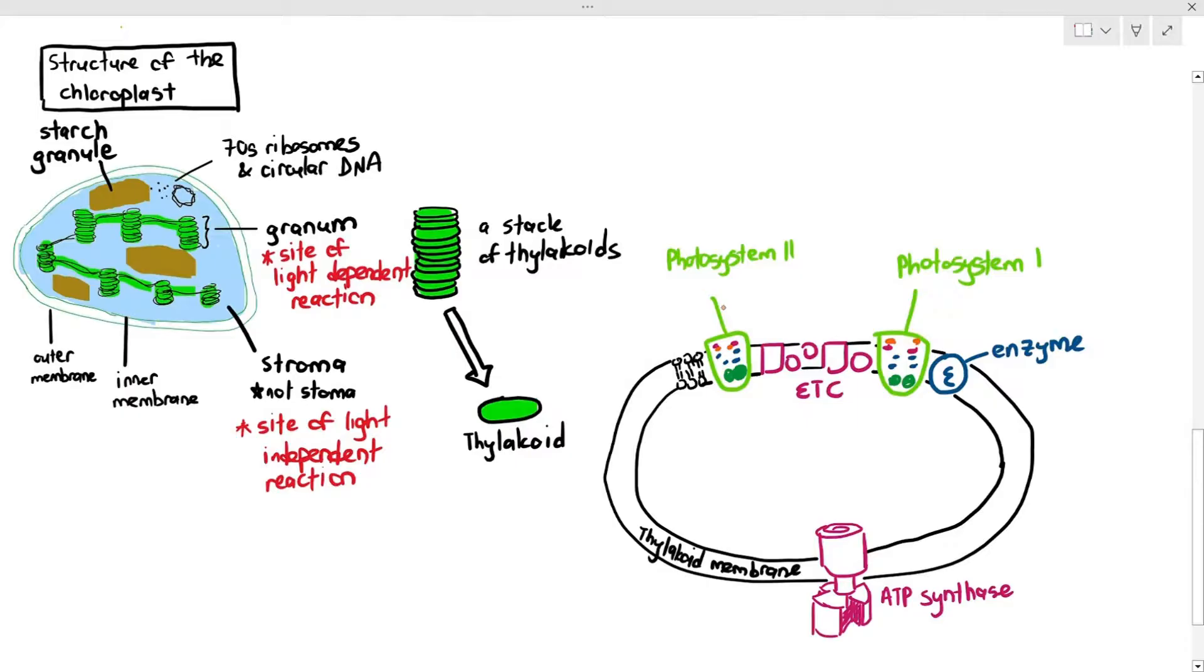And then after some time later, scientists then discovered photosystem 2. That is why they are named as such. It's a bit confusing and a bit annoying, I might add. But, you know, that's just the way biology is sometimes. And next to photosystem 1, there is also the presence of an enzyme. And I'll talk about the function of the enzyme in a while.